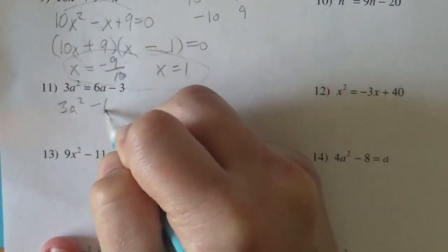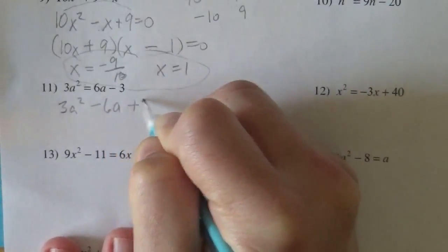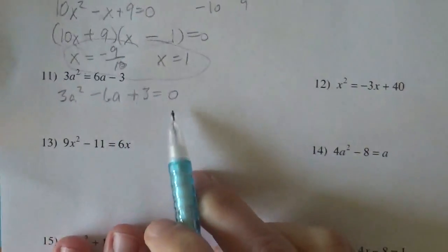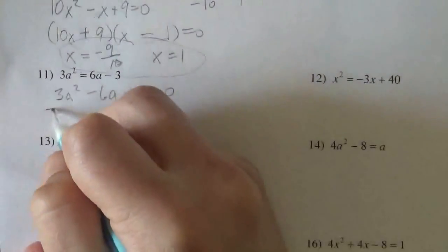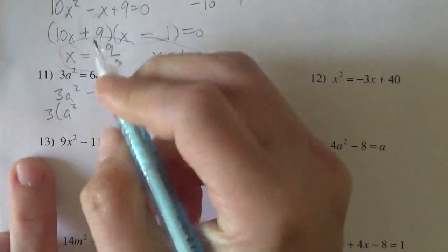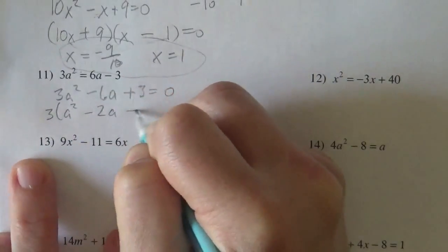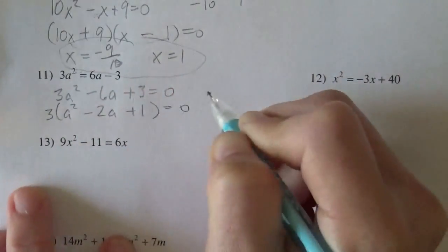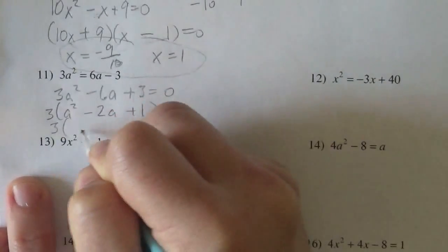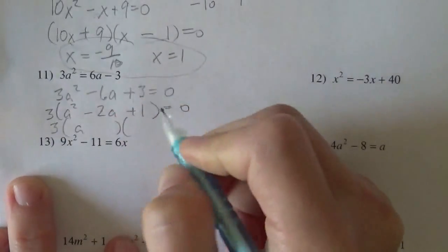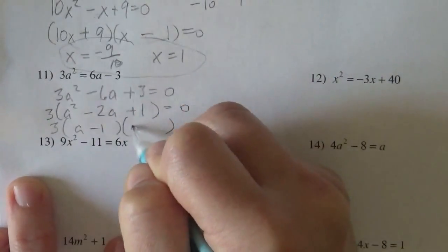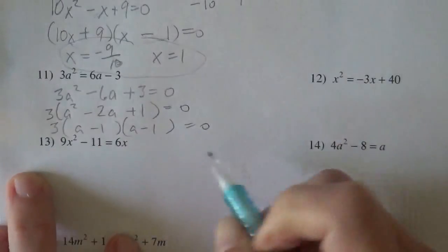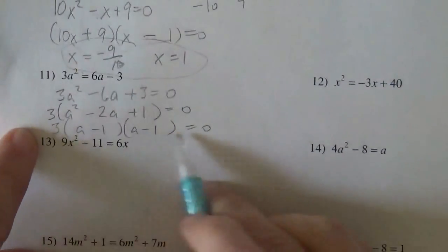So this one, 3a² - 6a + 3 = 0. Always want it set equal to 0 first. I'm going to factor a 3 out of here. 3 times (a² - 2a + 1) = 0. And this will factor more. If I do an (a - 1) and an (a - 1) = 0, that's completely factored.